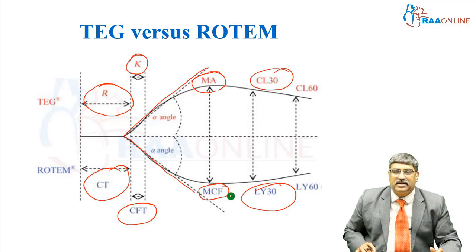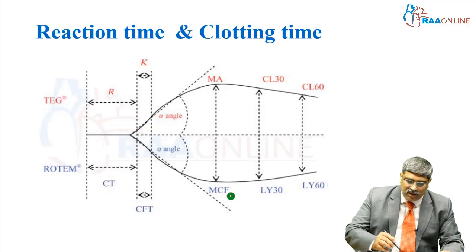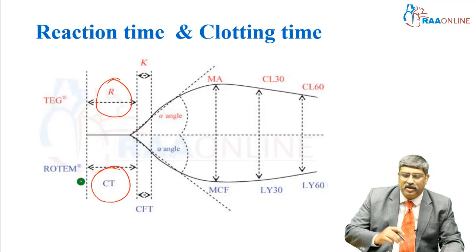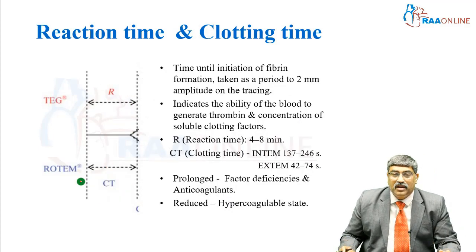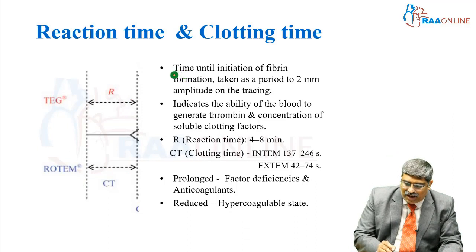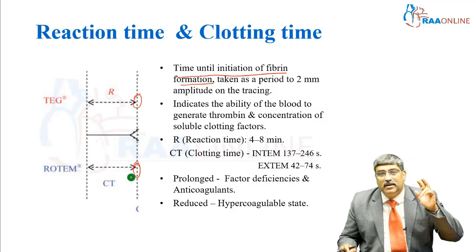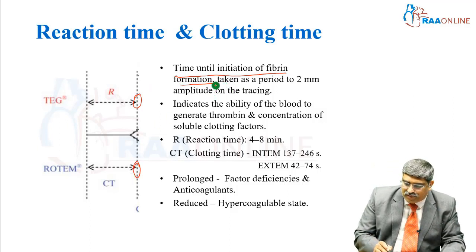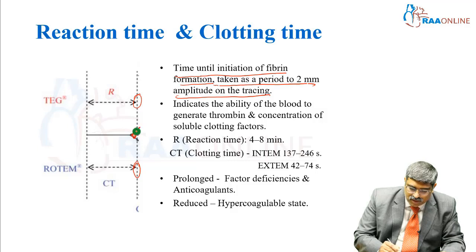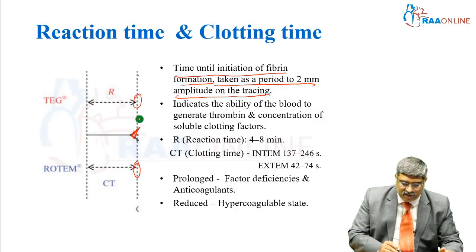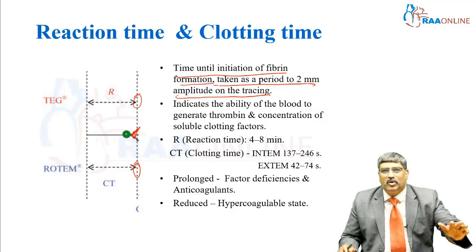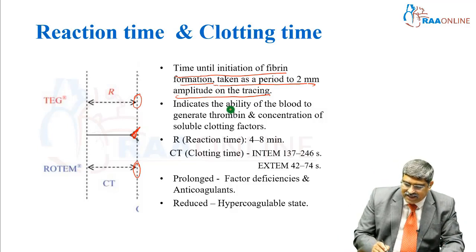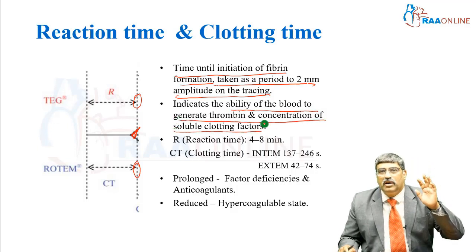What are these various indices? Let us look one by one. Coming to the reaction time or the clotting time in TEG and ROTEM — it is nothing but the time until the initiation of fibrin formation. The fibrin formation takes place and it is usually taken as a period of 2 mm amplitude on tracing — when the amplitude rises 2 mm from the baseline. That is your reaction time or clotting time. It indicates the ability of the blood to generate thrombin and the concentration of soluble clotting factors.